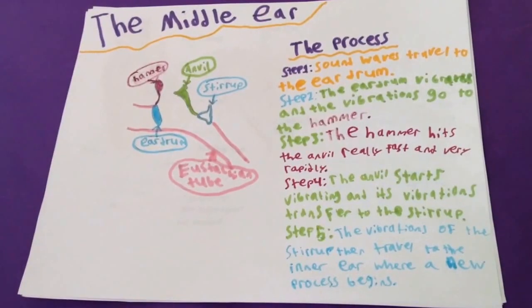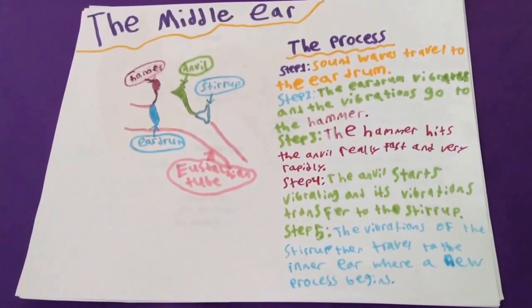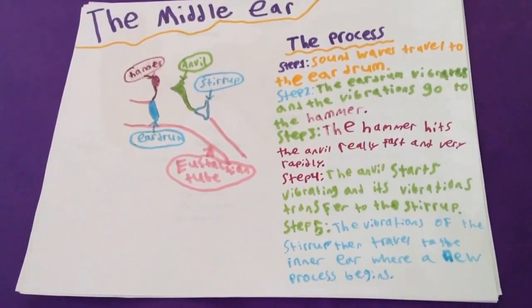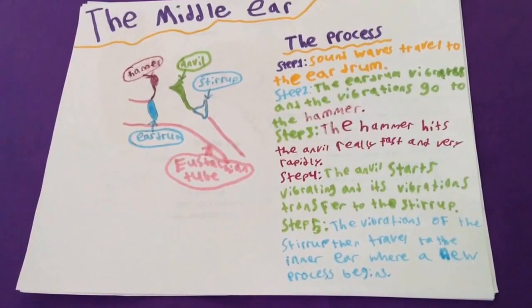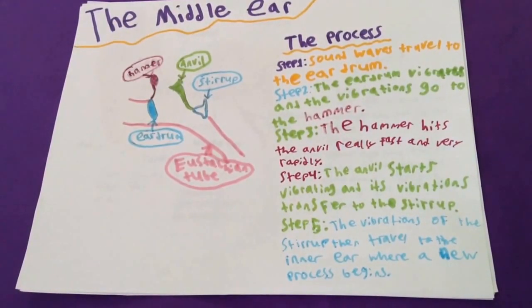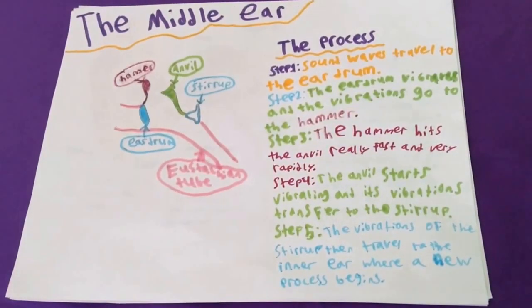Step 4: The anvil starts vibrating, and its vibrations transfer to the stirrup. Step 5: The vibrations of the stirrup then travel to the inner ear, where a new process begins.